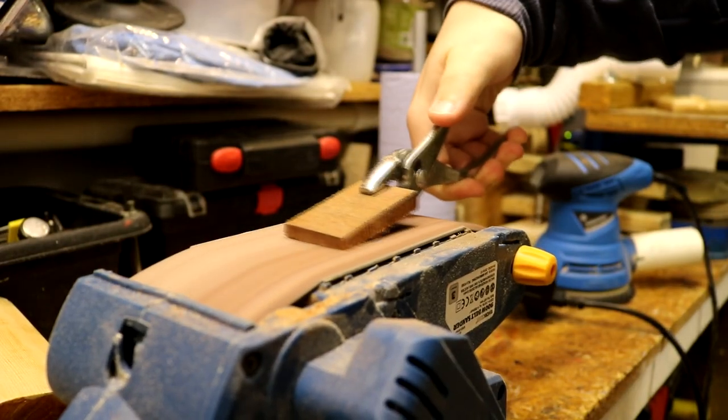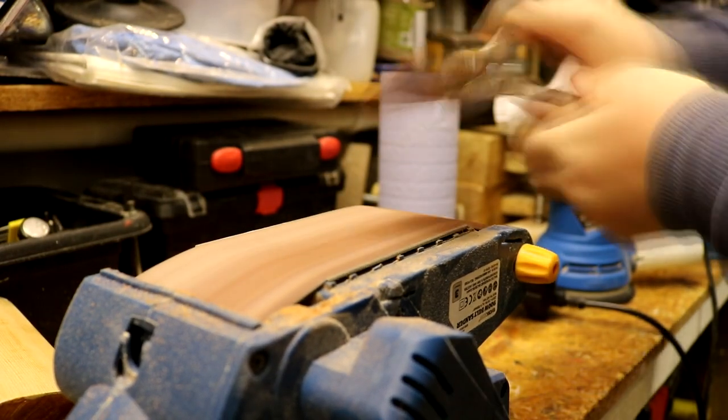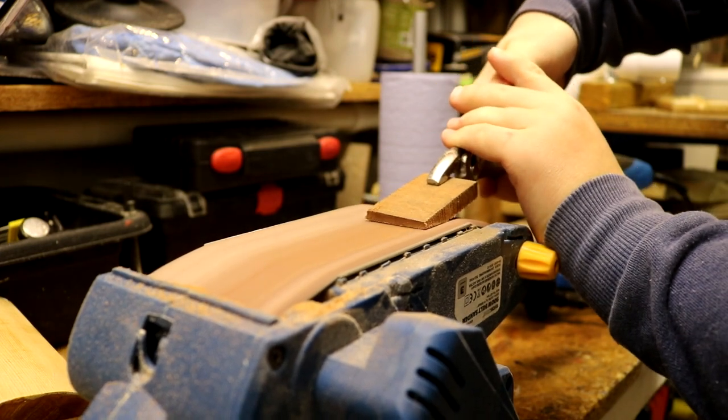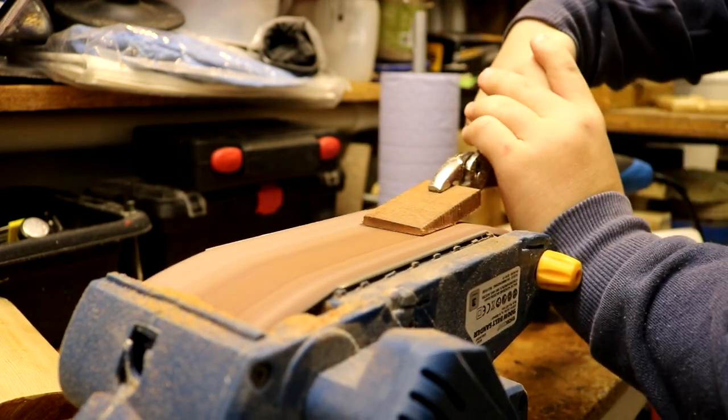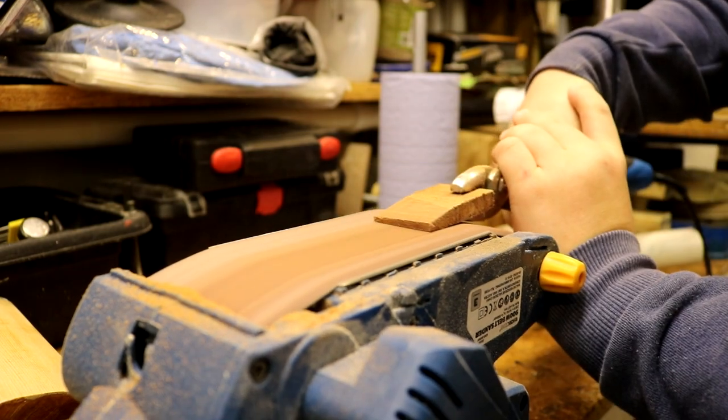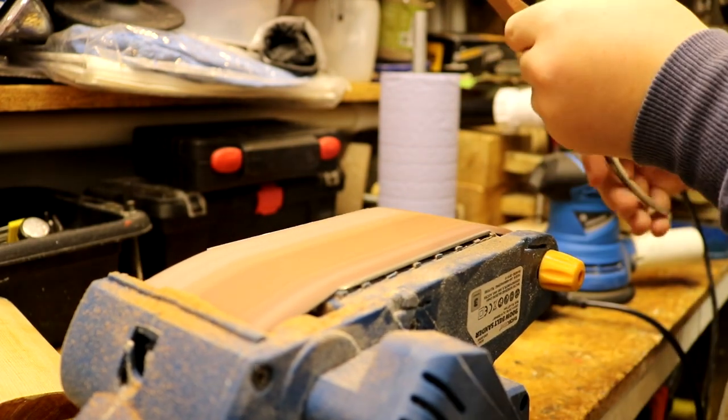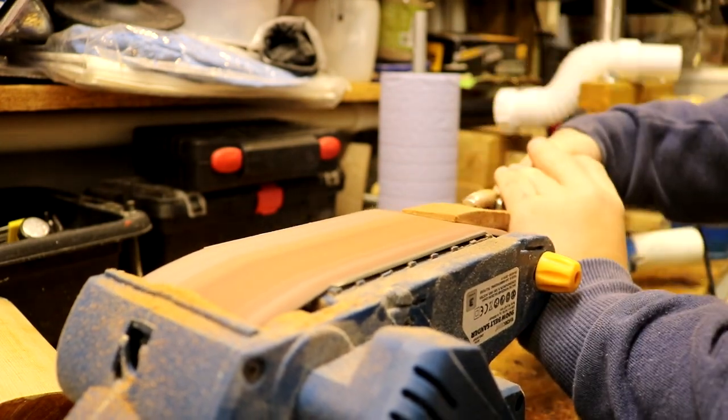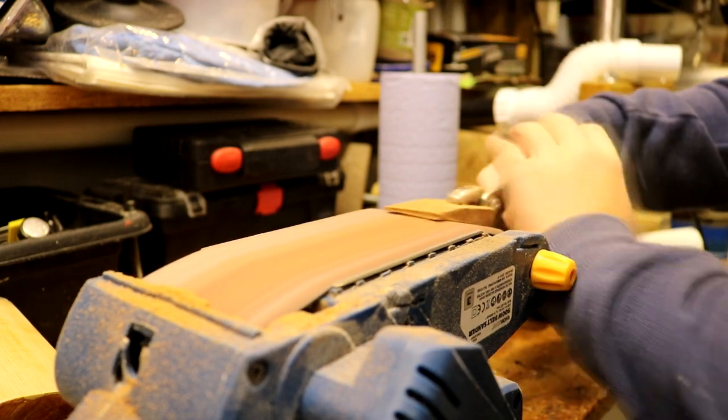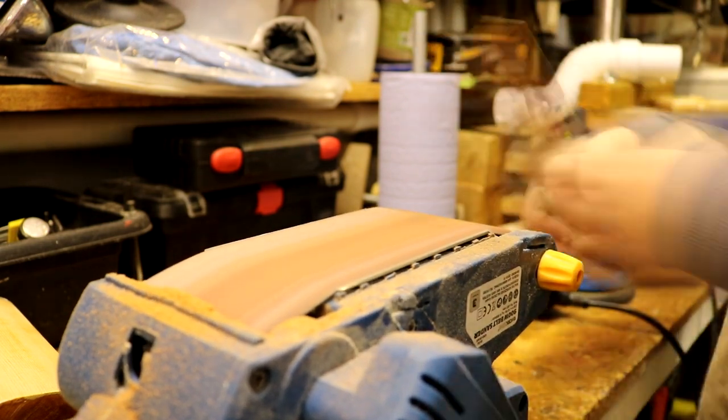I used a belt sander upside down to sand these into wedge shapes so that they would easily fit into the mallet and create a nice tight fit. Also forgetting to put on the dust collection again.